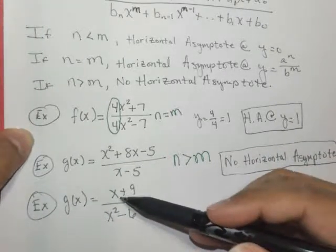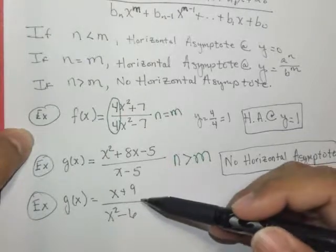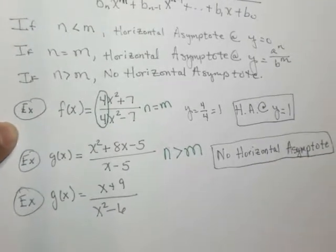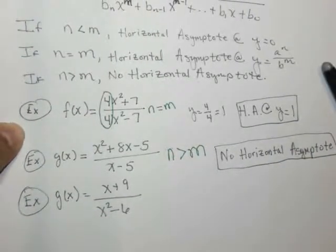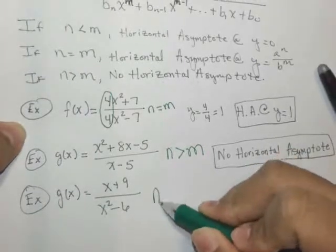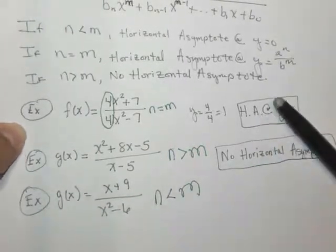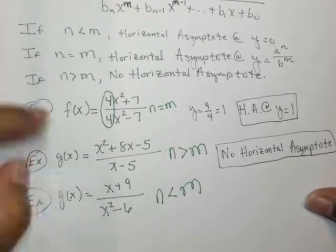It says x over x squared, right? So in this case, n is less than m. The power here is 1. The power here is 2.